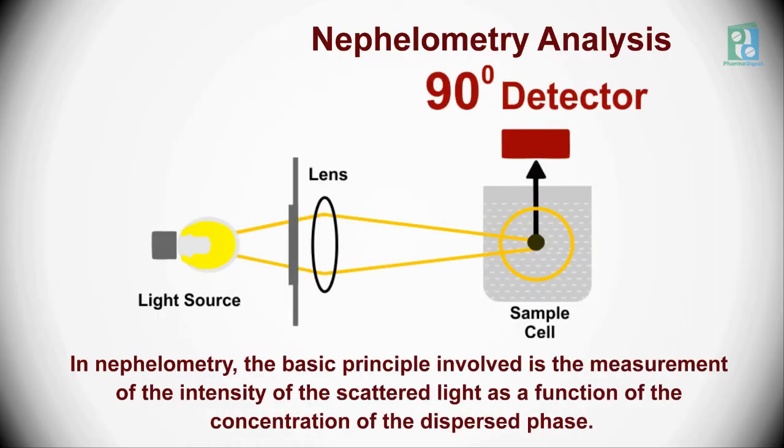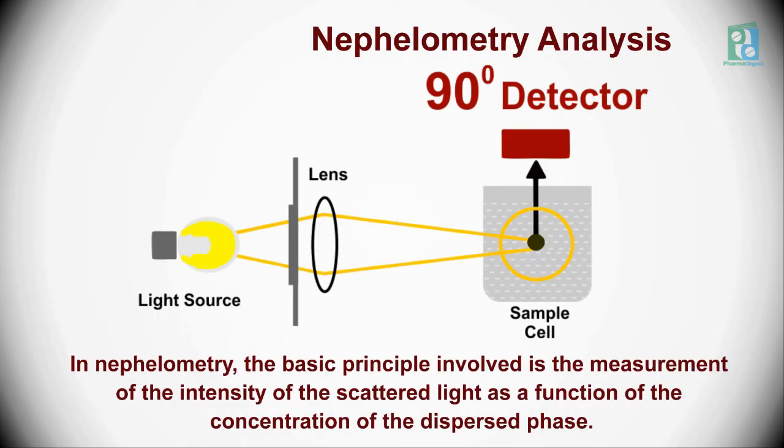In nephelometry, the basic principle involved is the measurement of the intensity of the scattered light as a function of the concentration of the dispersed phase. We can see this in the given diagram.